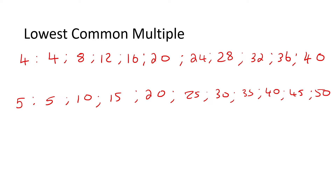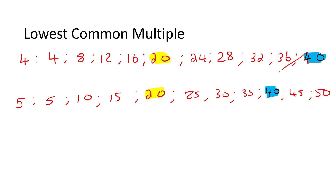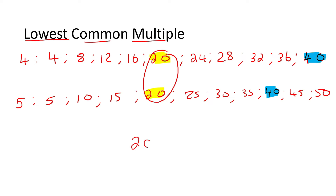I then want you to look for all the numbers that are in both. There's a 20 over there and over there, and then there's a 40 over there and over there. So we can say that 20 is common because it's in both, and 40 is also common — those are definitely common multiples. But if the question says what is the lowest, then the answer would be 20, because the lowest means the smallest one. 40 is bigger than 20, so the lowest common multiple of those two numbers would be 20.